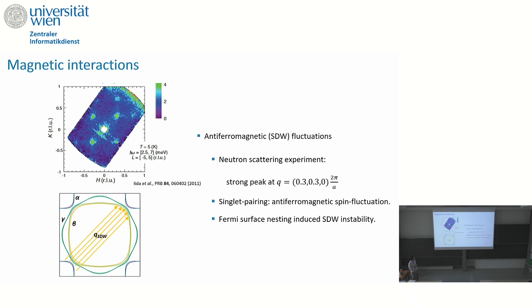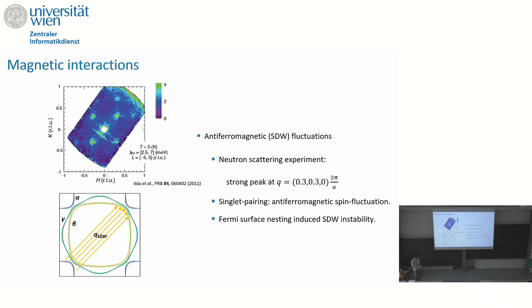But antiferromagnetism in this system is actually even stronger. The neutron scattering experiment shows a very strong peak at the q-vector around (0.3, 0.3) in the 2D Brillouin zone, which coincides with the Fermi surface nesting vector. What people think is that promoted by this Fermi surface nesting, there is a very strong antiferromagnetic spin-density-wave-type fluctuation — this is really the main magnetic instability. This antiferromagnetic spin fluctuation can also promote singlet pairing scenarios.